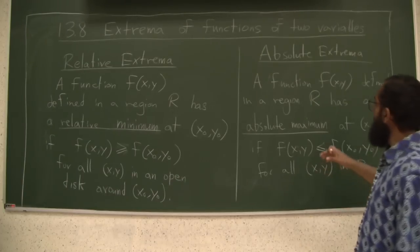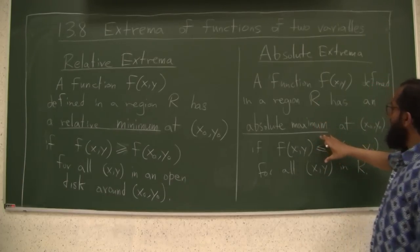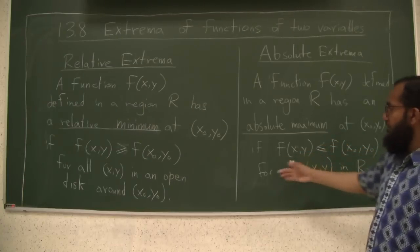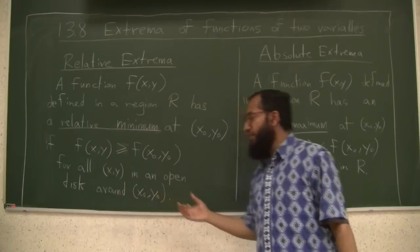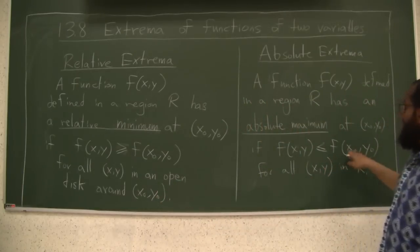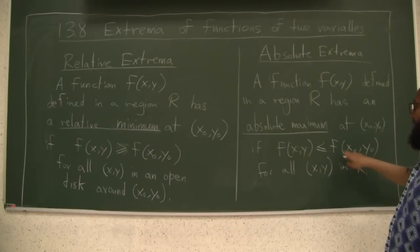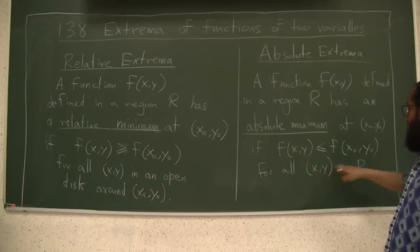The critical difference here at absolute maximum is that it's not saying that you can find a little neighborhood around the point where you can make this guy the winner. It's saying that he wins over everybody, or at least doesn't get beaten by anybody, for all x, y in R.